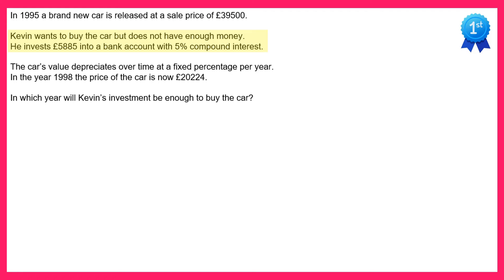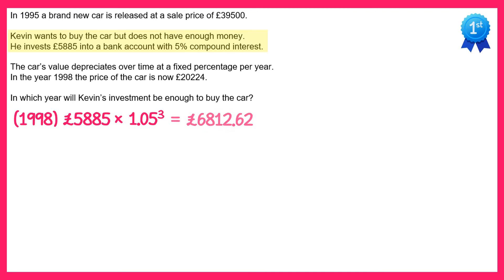Let's see if Kevin's investment will reach that value so he'll be able to buy the car in 1998. In 1998, Kevin's investment will have been in the bank for three years, so we take £5,885 and multiply it by 1.05 to the power three. This gives a value of £6,812.62. But the car's value is £20,224 at that point, so he definitely doesn't have enough money.